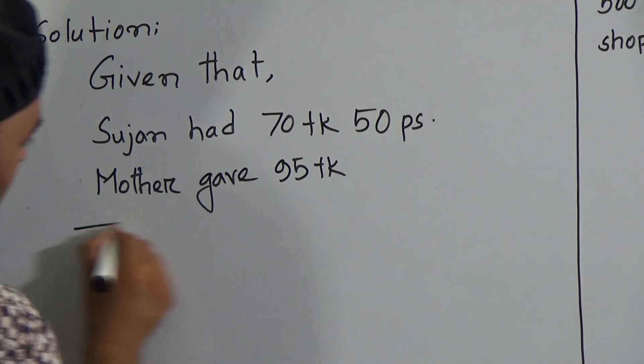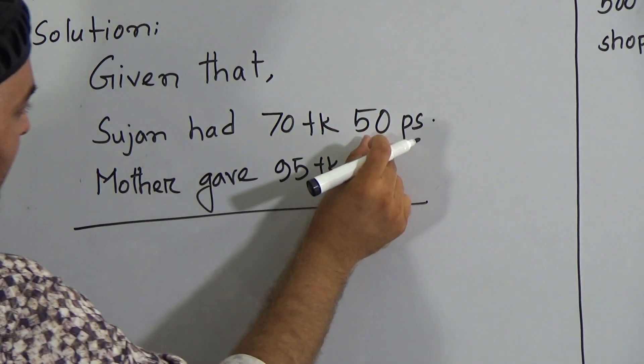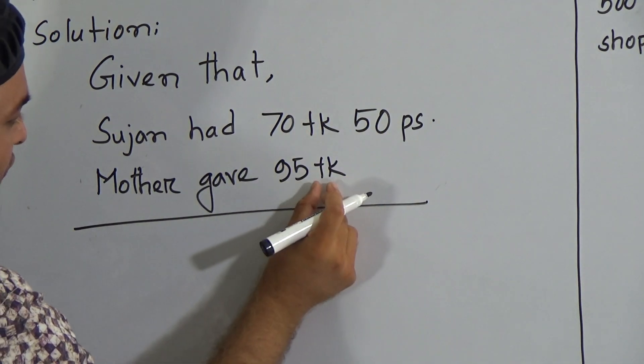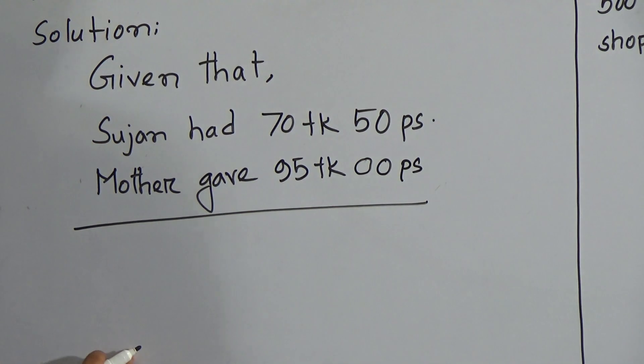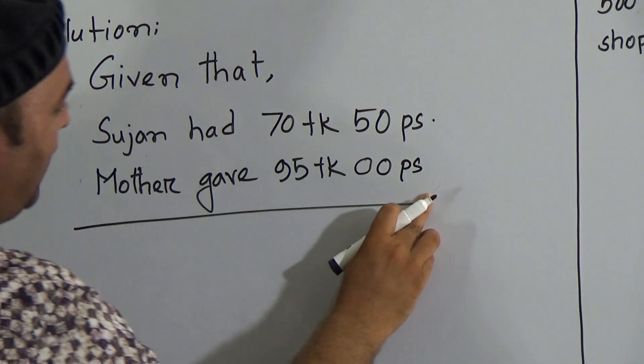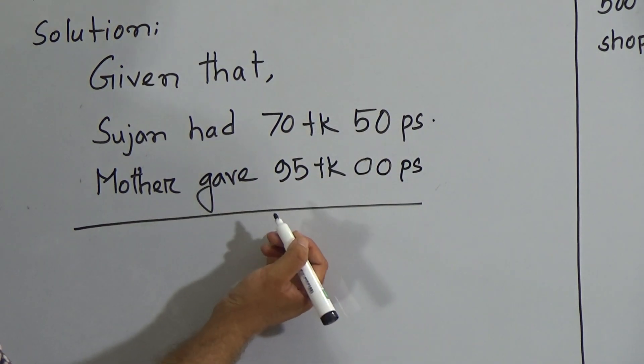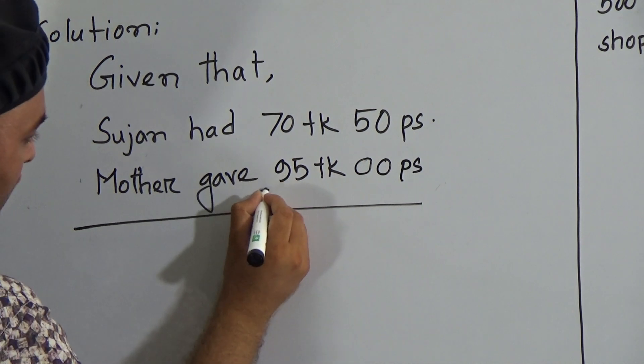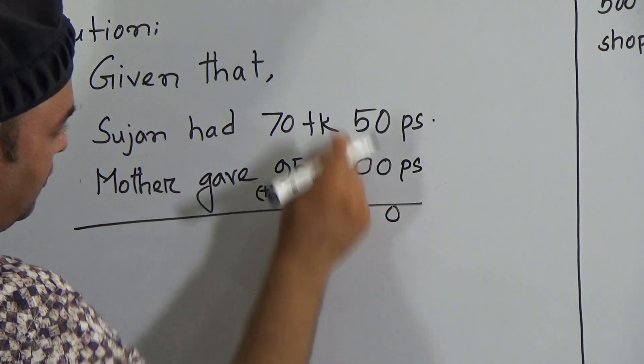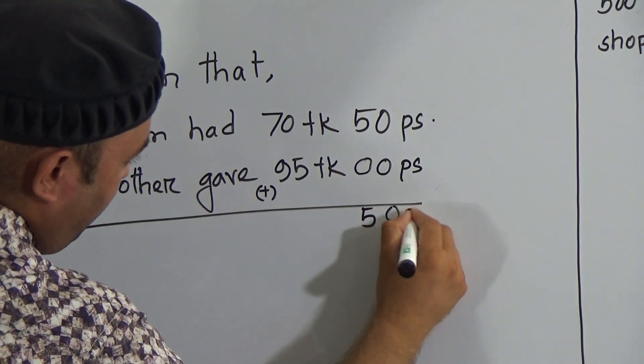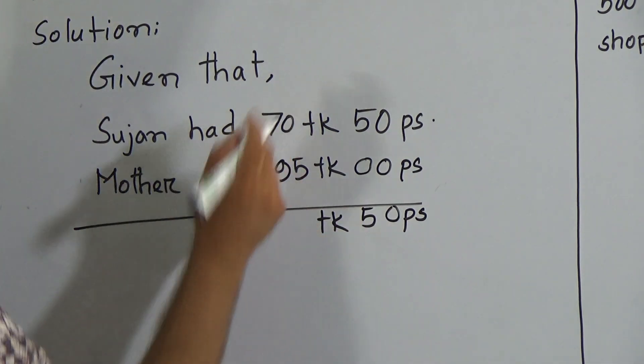Now here is 70 taka and 50 poises and here is 95 taka. For here we can write 0 poises because we know that to add something with 0 is that one. Now how much amount did Sujan have? So we have to add these two amounts. 0 plus 0 is 0, 0 plus 5 is 5, so here is 50 poises.